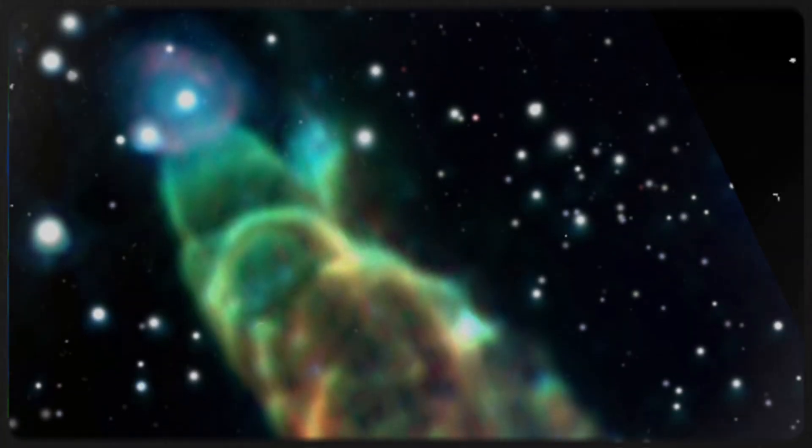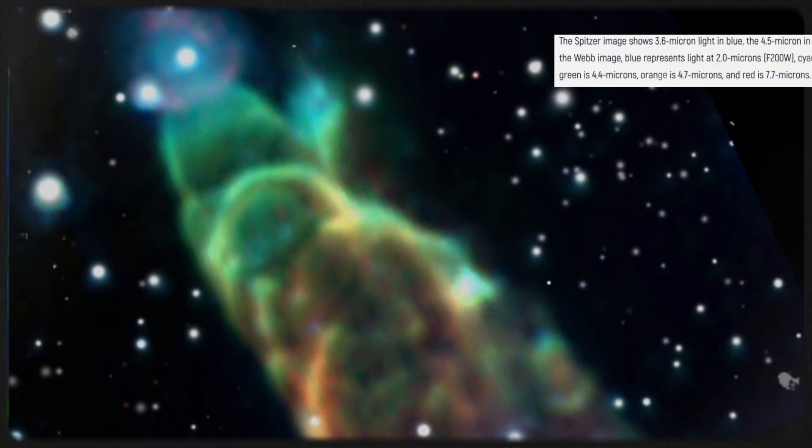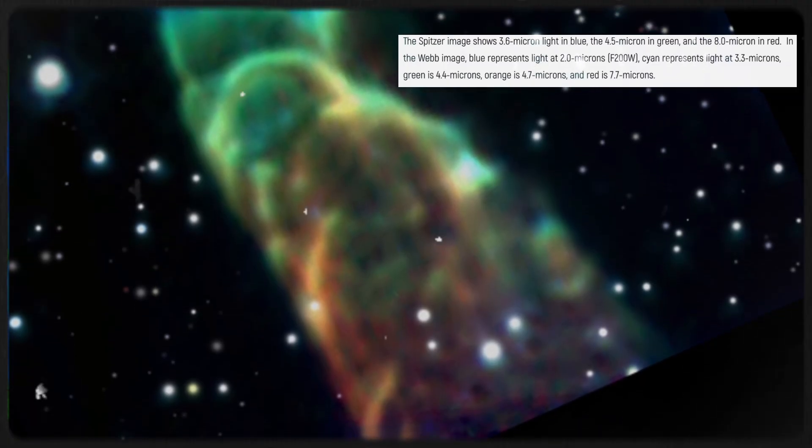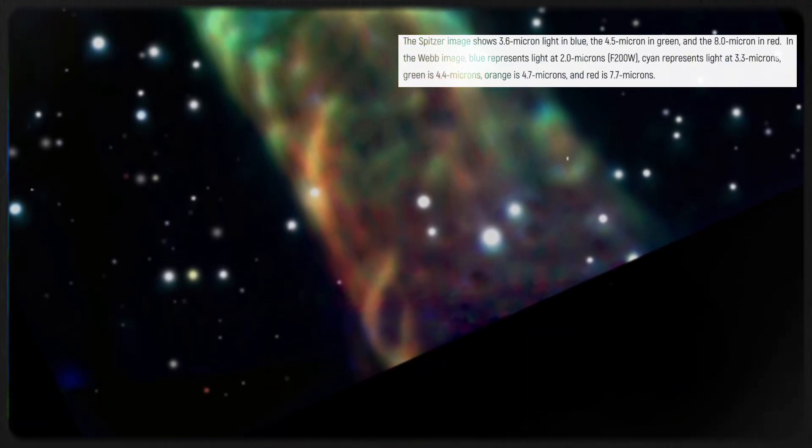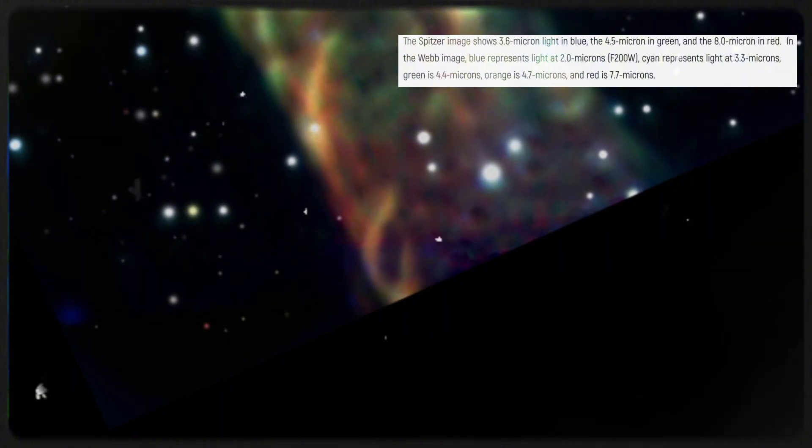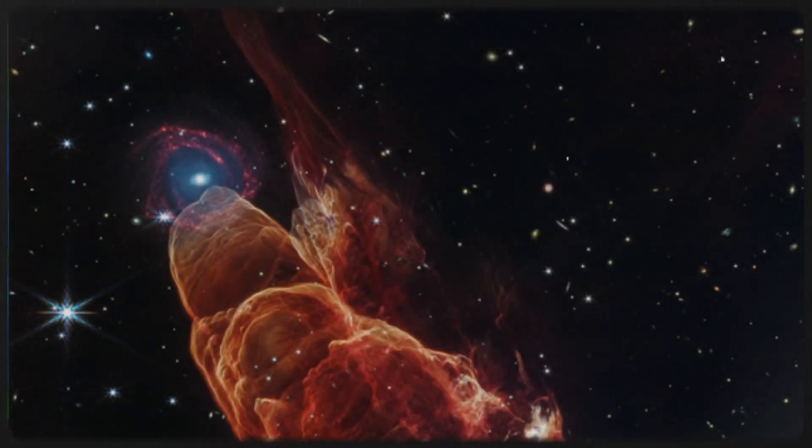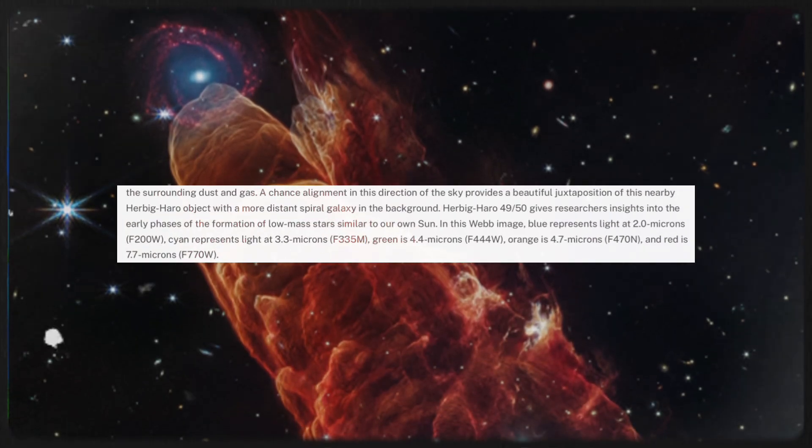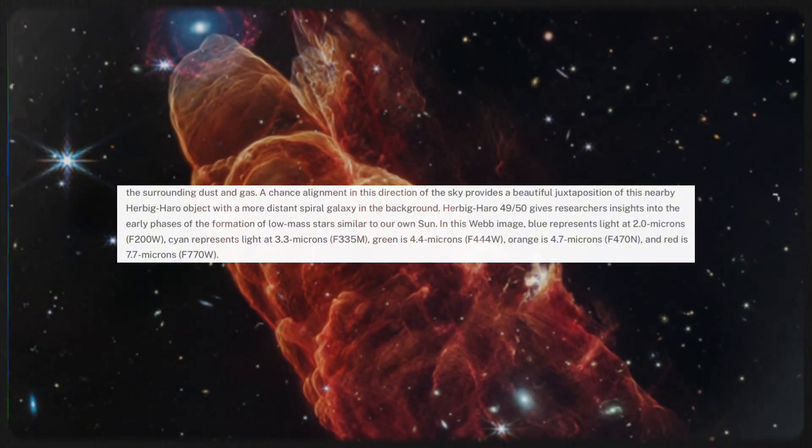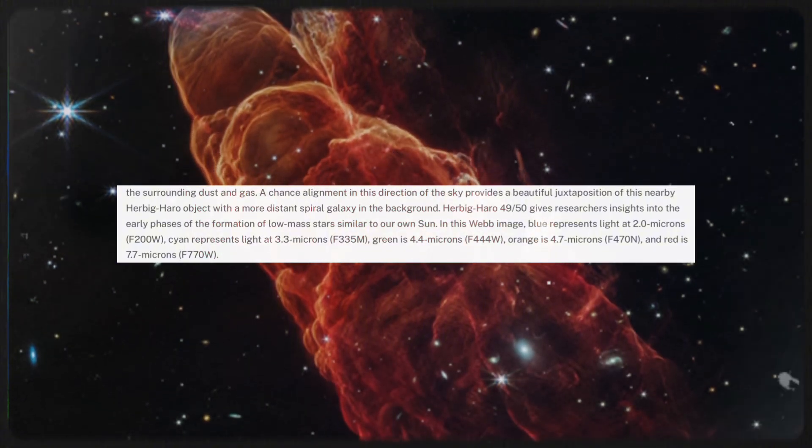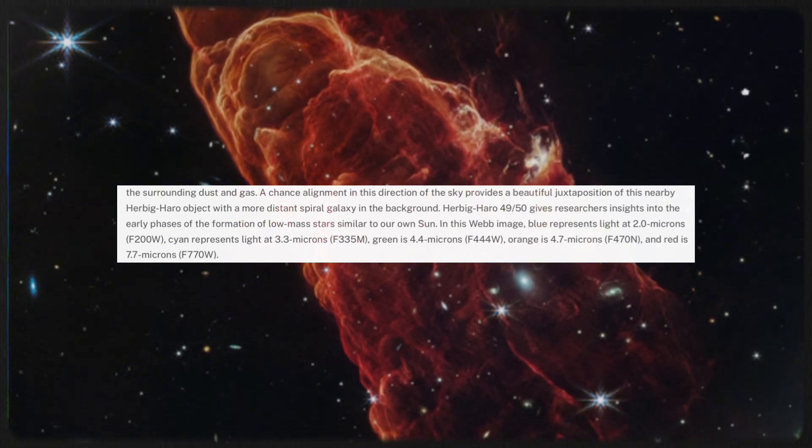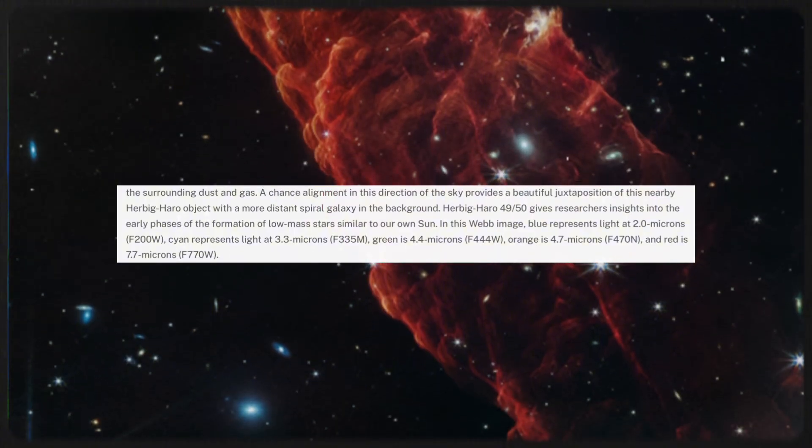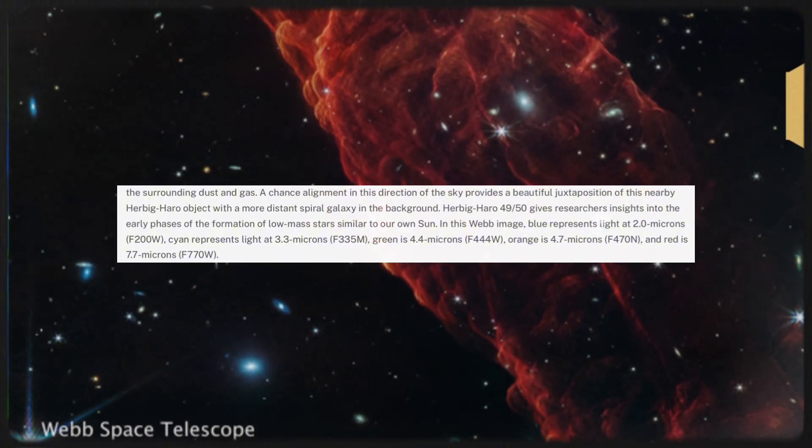In the Spitzer image, the colors represent different wavelengths of light. The blue in the image corresponds to 3.6 micron light, green to 4.5 micron light, and red to 8.0 micron light. This particular view helps us trace the complex processes happening around this young star. The Webb image takes things a step further, offering a deeper perspective with its multi-wavelength approach. Blue in the Webb image corresponds to 2.0 micron light, cyan for 3.3 micron, green for 4.4 micron, orange for 4.7 micron, and red for 7.7 micron light, each revealing different aspects of the gas, dust, and energetic phenomena occurring within the outflow.